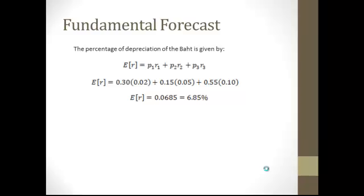Now we look at the fundamental forecast. According to the fundamental forecast, there is a 30% chance the Thai baht will depreciate by 2% over the next 90 days, and a 55% chance it will depreciate by 10%. To determine the expected depreciation rate, we multiply the probability of each scenario by the percentage decrease. From this, the expected rate at which the baht will depreciate is 6.85%.